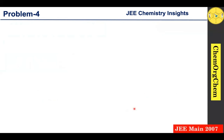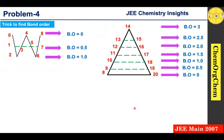Before moving to the solution, I'd like to remind you about the trick to find the bond order. We have already discussed how to find bond order using two diagrams — the W-shape diagram and the triangle-shape diagram. The first diagram is useful when a molecule has a total number of electrons from 0 to 8, and the second diagram is useful when the total number of electrons is 8 to 20.